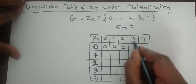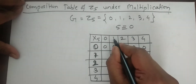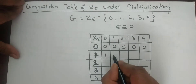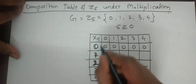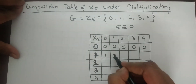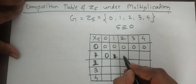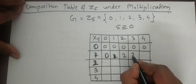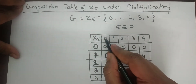Do usual multiplication: 0×0=0, 1×0=0, 2×0=0, 3×0=0, 4×0=0. For the next column: 0×1=0, 1×1=1, 2×1=2, 3×1=3, 4×1=4.